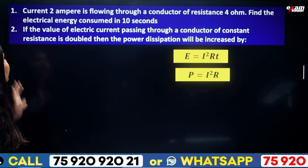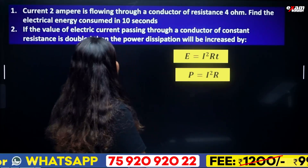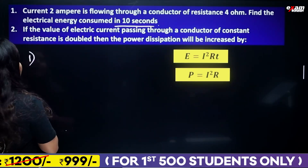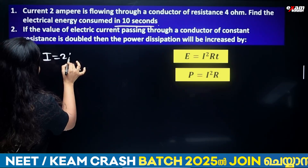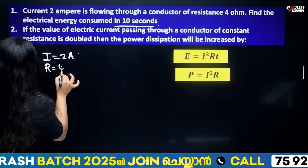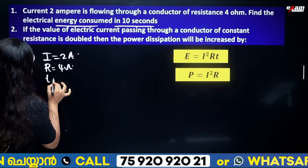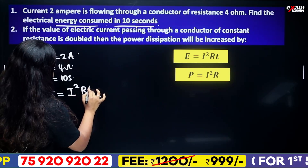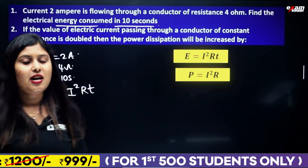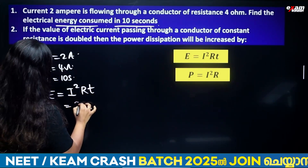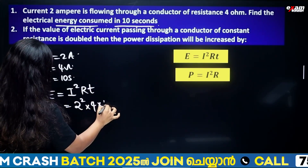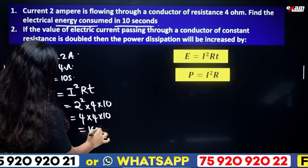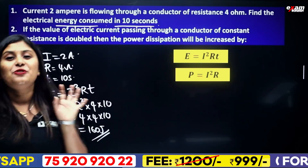A current of 2 A flows through a conductor of resistance 4 ohm. Find the electrical energy consumed in 10 seconds. Using E = I²RT: 2² × 4 × 10 = 4 × 4 × 10 = 160 joules.